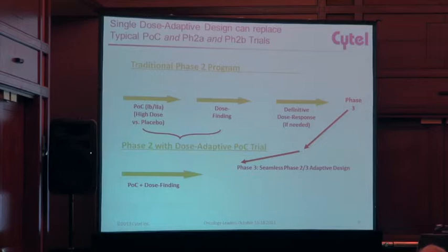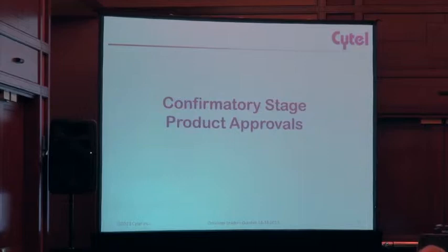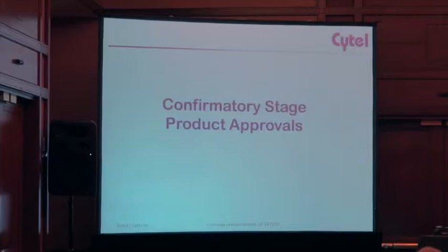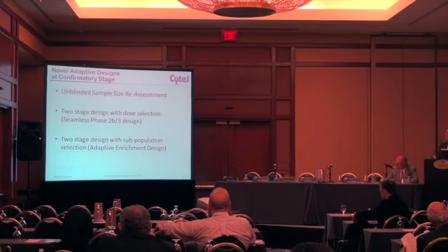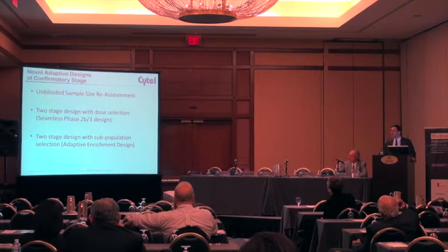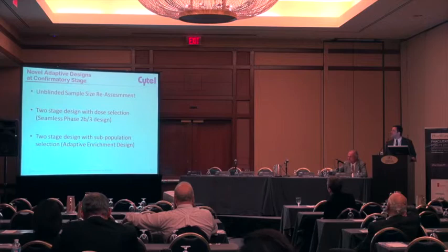That's about phase two. I did try to make an analogy and put oncology in the context of how phase two is done in other therapeutic areas. At the confirmatory stage, there are three main types of adaptive designs, and they all address remaining uncertainties as you come into phase three.